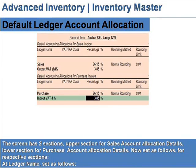The screen has two sections: the upper section for sales account allocation details, and the lower section for purchase account allocation details. Set the fields as follows for the respective sections.